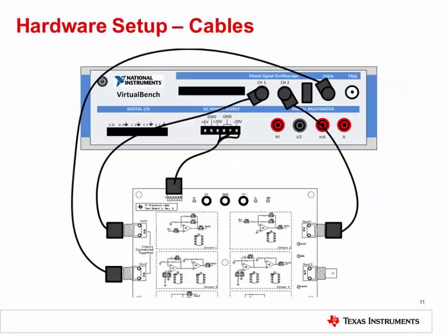This gives the connection diagram between the TI Precision Labs test board and the National Instruments VirtualBench. Connect the provided power cable to the DC power supply of the VirtualBench and power connector J4 on the test board. Connect VIN2 on the test board to VirtualBench channel FGEN, our function generator. Then connect VIN1 on the test board to VirtualBench Oscilloscope Channel 1, and VOUT1 on the test board to VirtualBench Oscilloscope Channel 2.